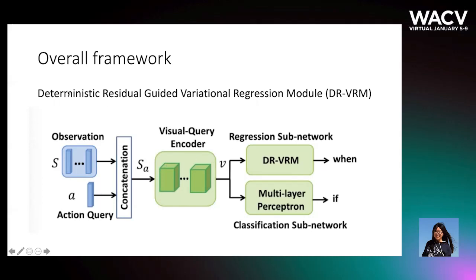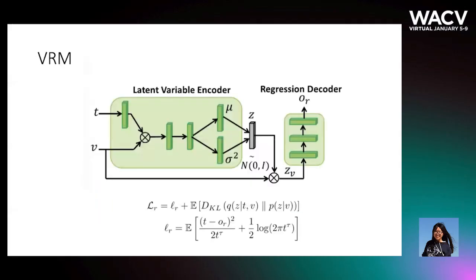Another key factor is the Deterministic Residue Guided Network, which can allow the network to generate precise anticipation. Let's now look at the detail. First, let's look at the Variational Regression Module.